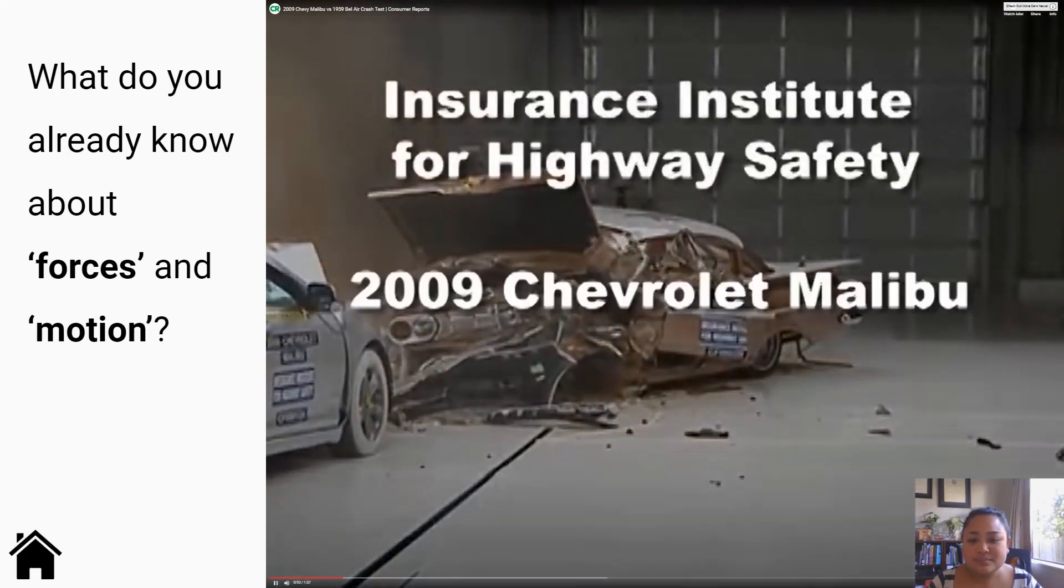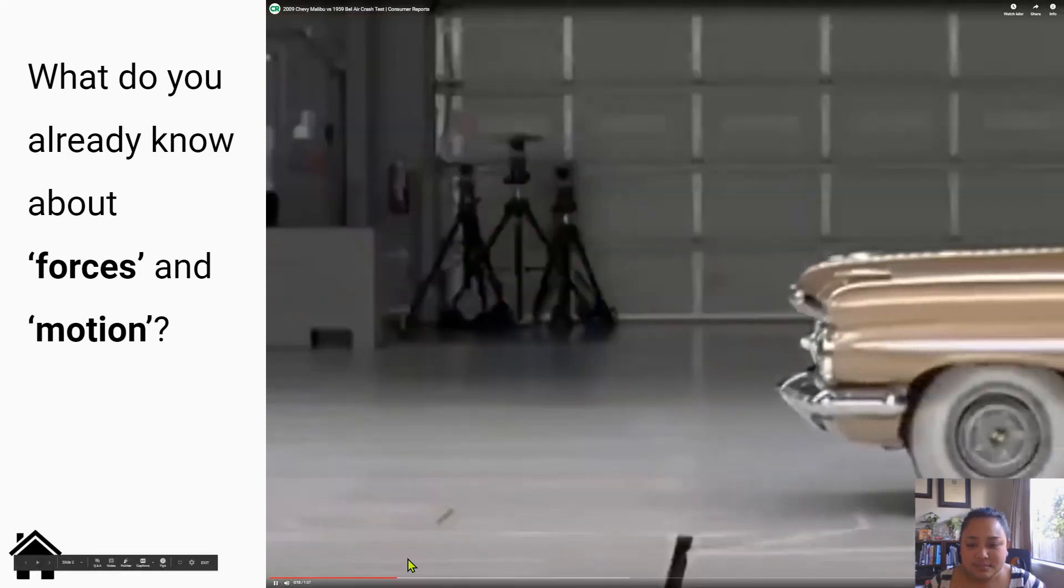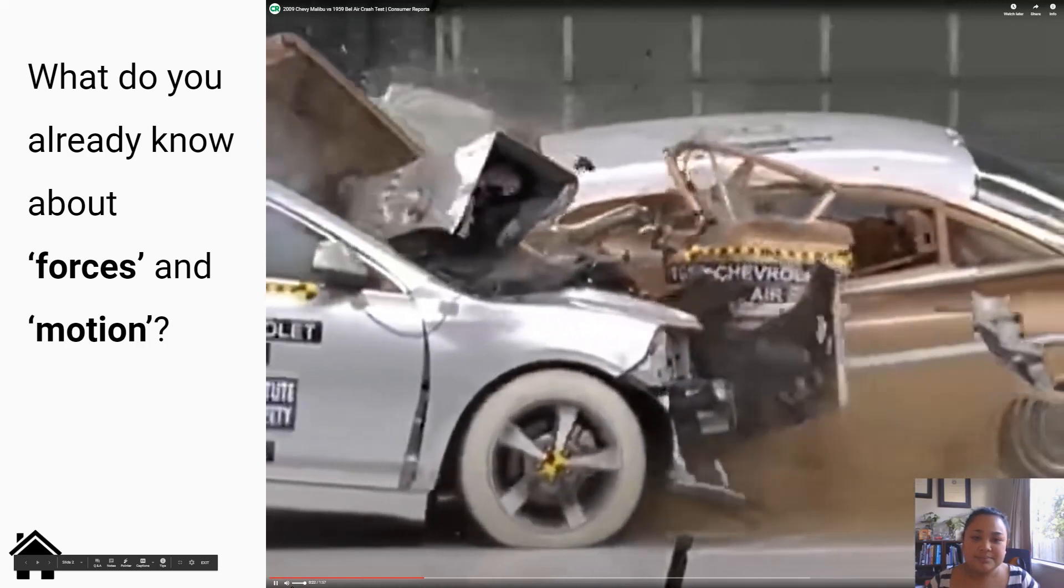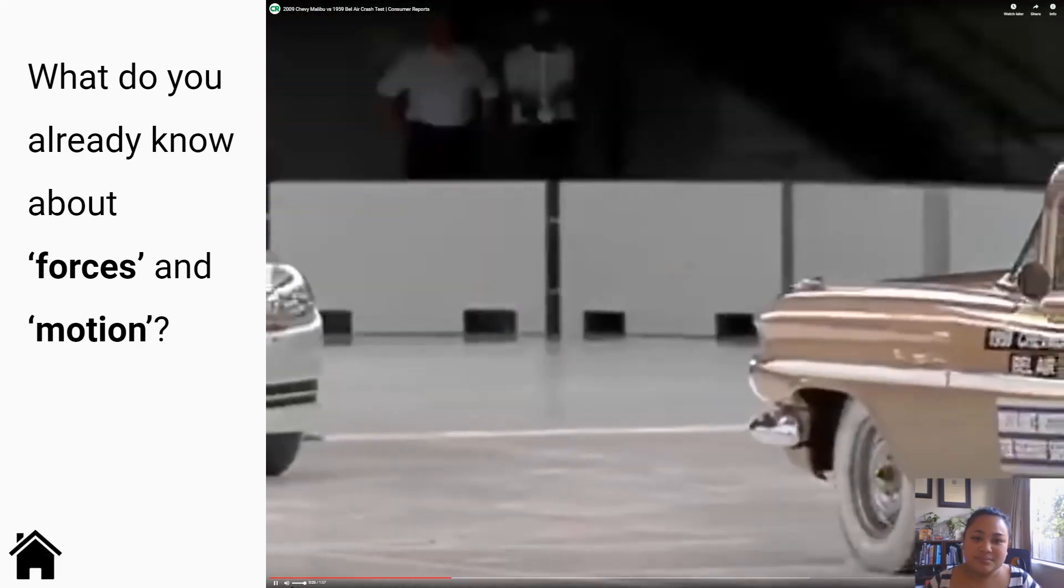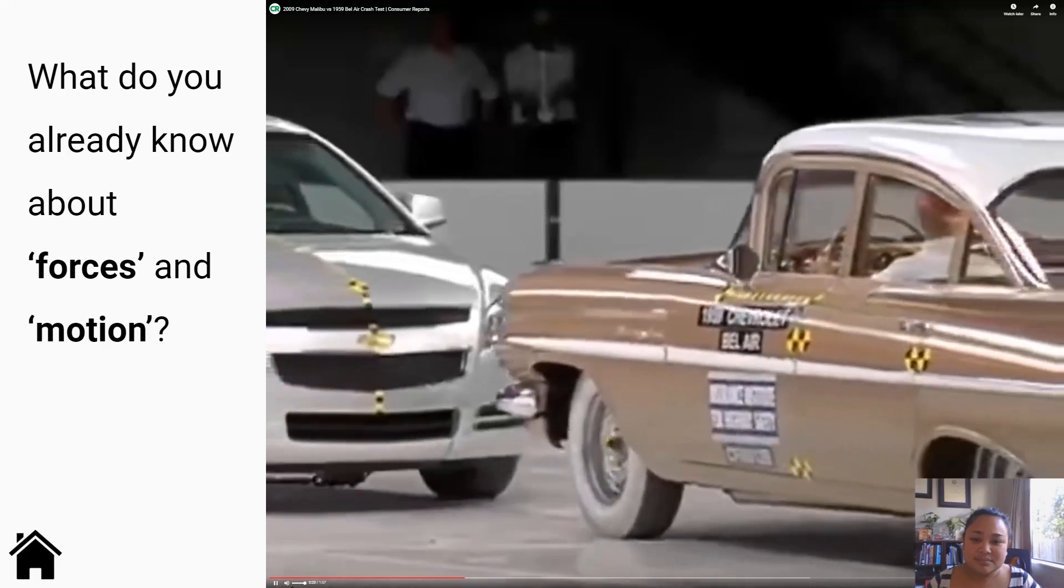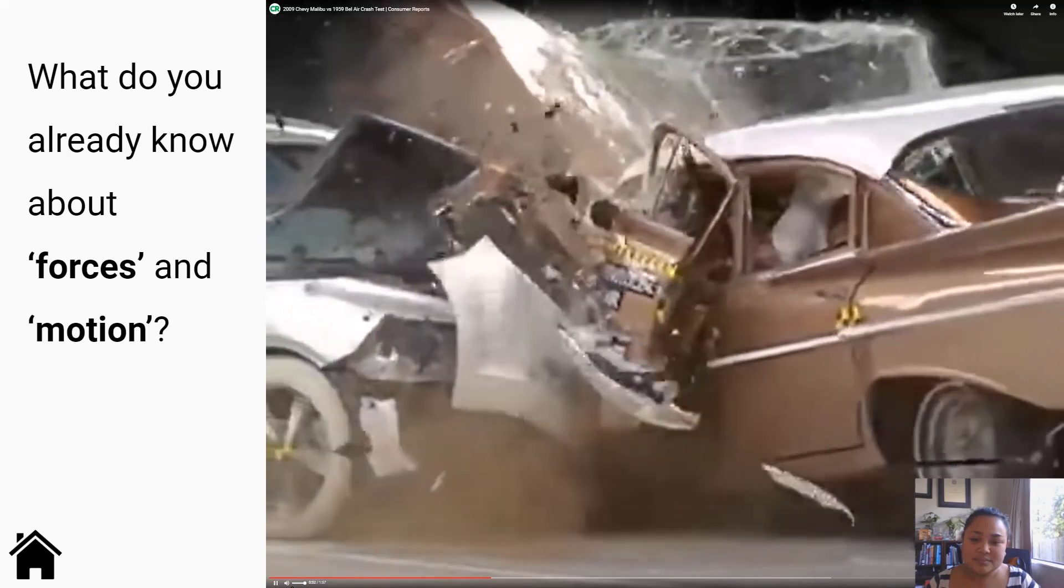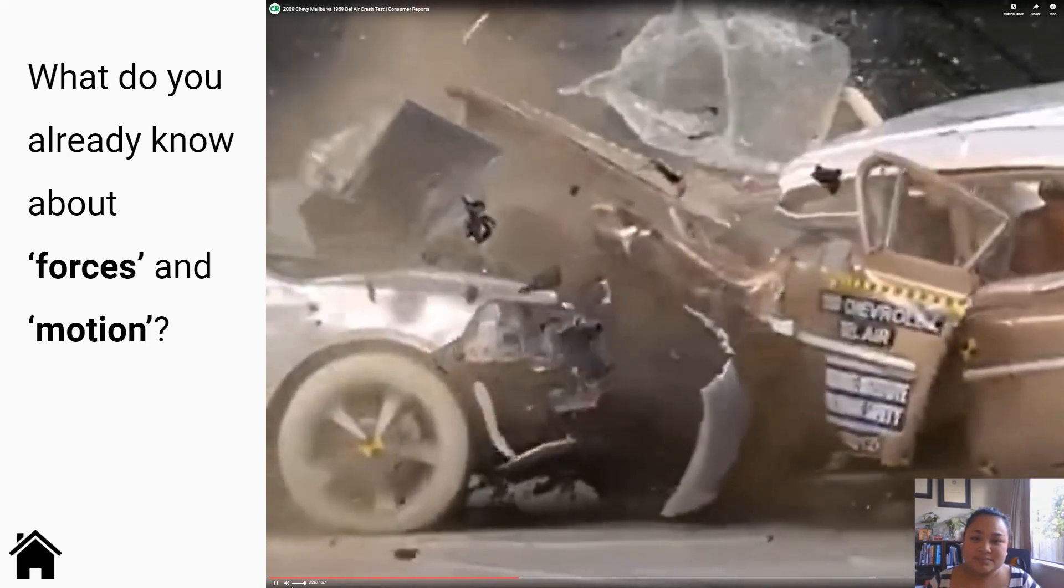That's the Insurance Institute for Highway Safety's front crash of a 2009 Chevrolet Malibu in 1959 Chevrolet Bel Air. In slow motion you can see the differences in how the new and classic cars perform in this version of the traditional frontal offset test. The Institute conducted this test to commemorate its 50th anniversary and dramatically shows how much improvement has been made in passenger protection since the nonprofit organization opened its doors.